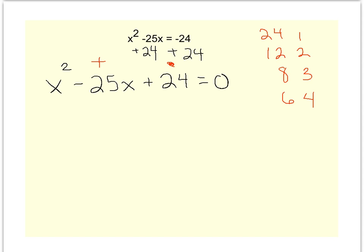Which set will multiply to give me a positive 24 and add to give me a negative 25? Well, a negative 24 plus a negative 1. So I make my two parentheses, I don't forget to bring down my equal 0, I've got x minus 24, and x minus 1.